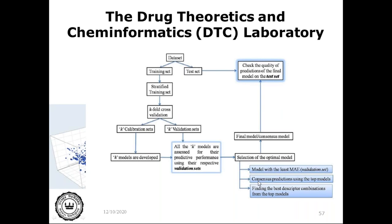Consensus prediction means using more than one model. Instead of using individual models, one uses multiple models and calculates consensus predictions, which are always preferred over individual models — because in consensus predictions the applicability domain will be wider, we are considering different hypotheses characterizing different models, and we can nullify problems of any particular model using a consensus model. We can use the best descriptor combination from top models, and the optimal model is then used for prediction of test set compounds. This is the theory of double cross-validation implemented in this particular tool.